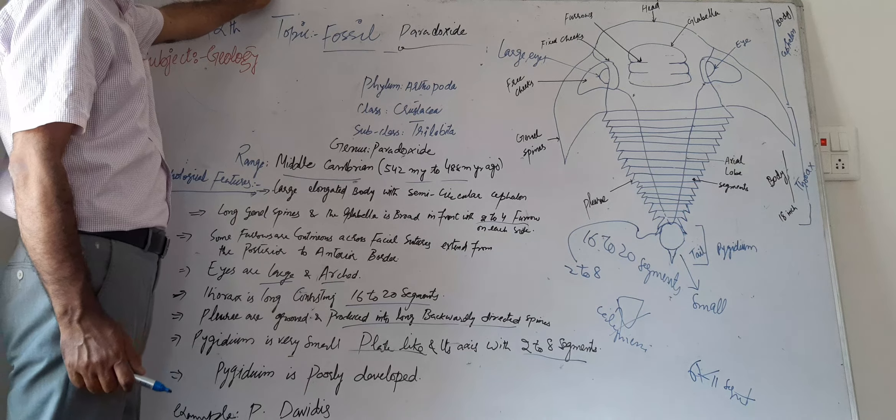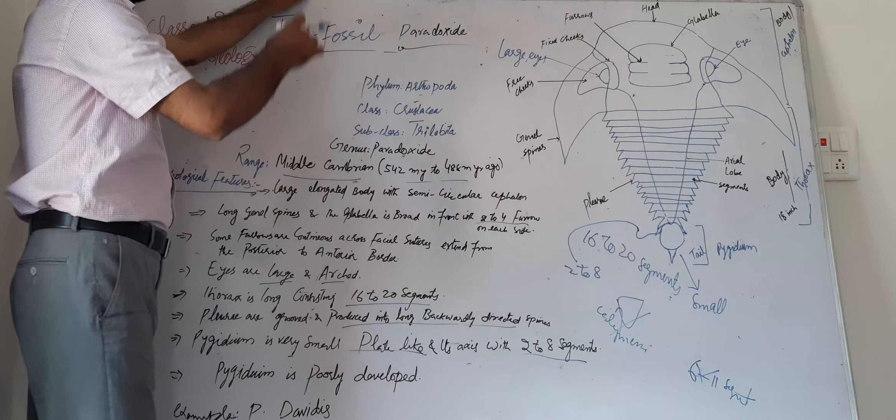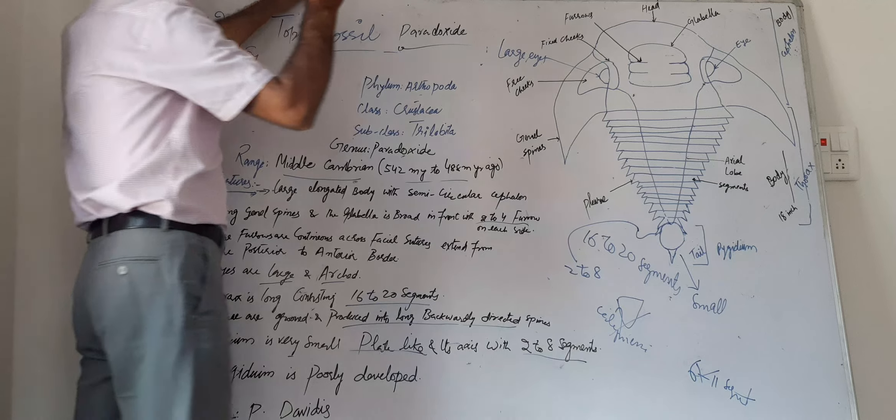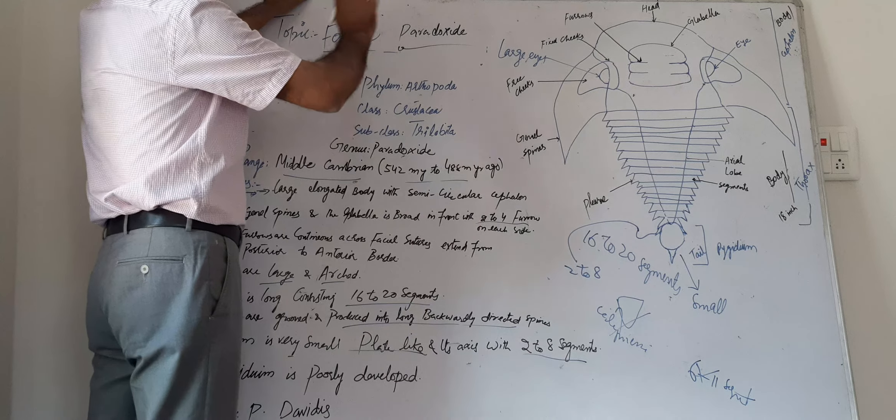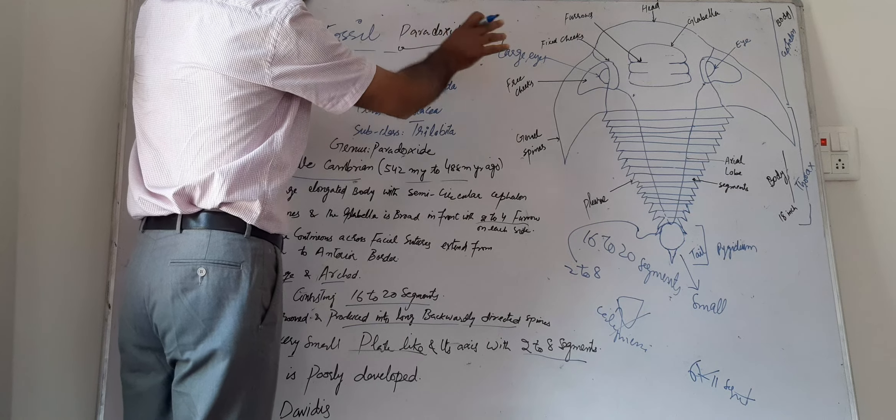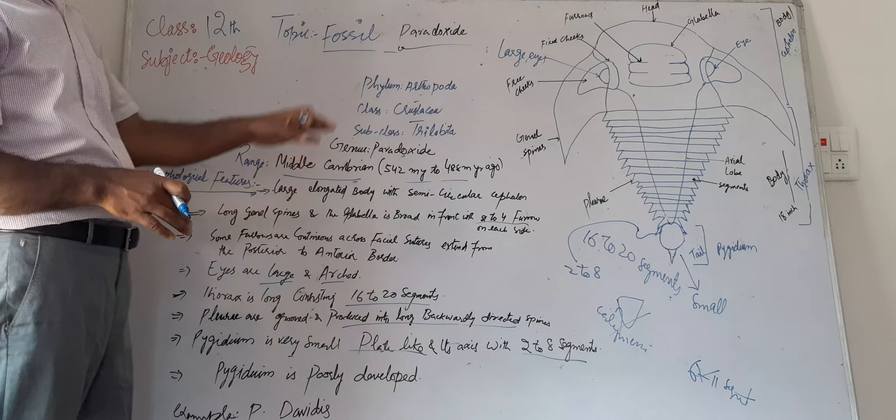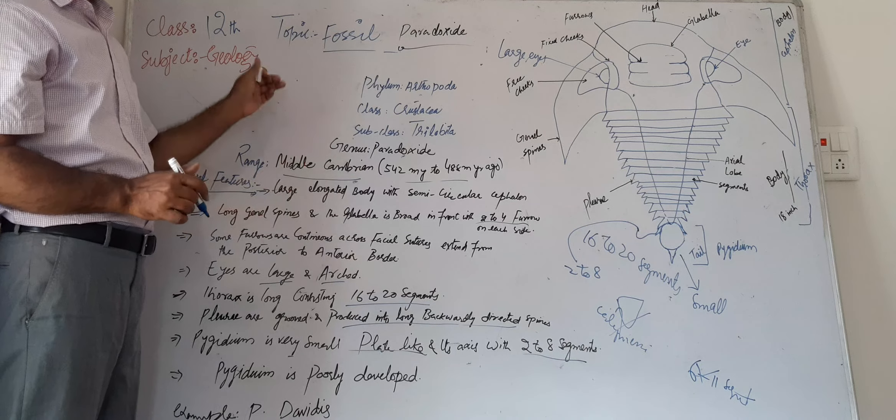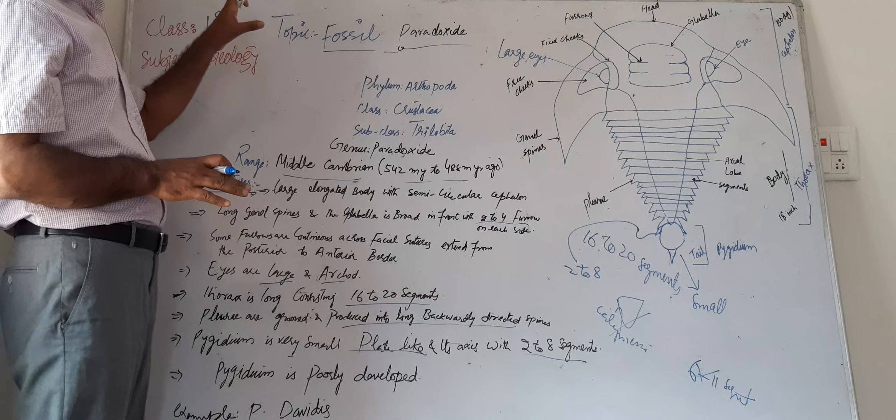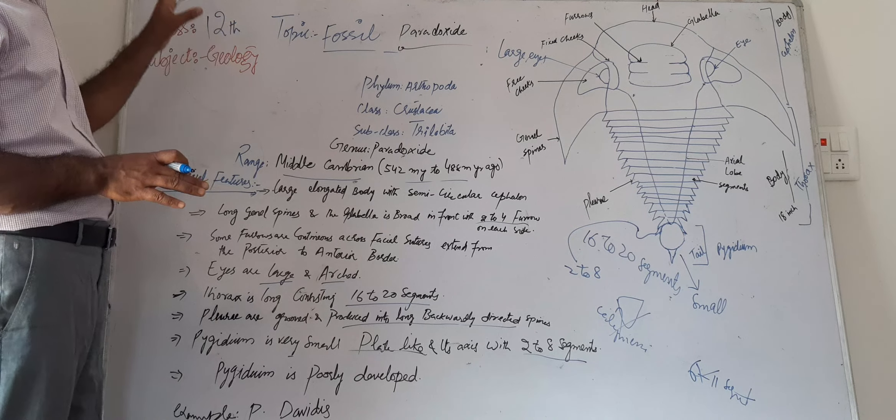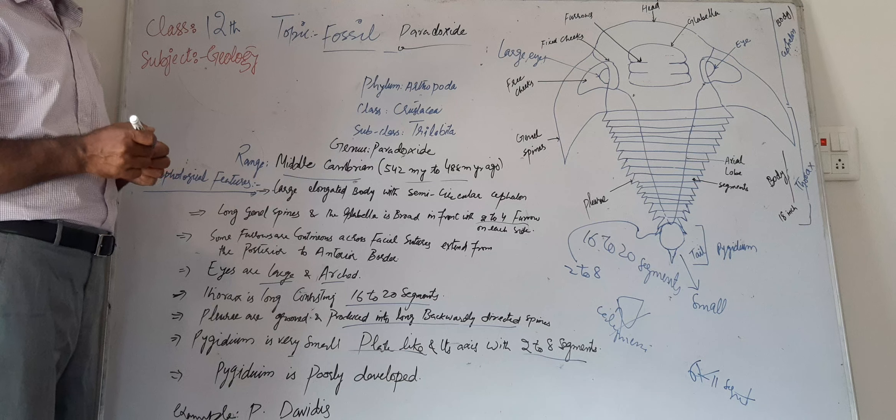This is simple—we can draw this figure, a diagram, and then label its different parts. That is the easiest way to explain, understand, or discuss the different things regarding the fossil Paradoxides. This was all about the different points about Paradoxides which help us in easy understanding of this fossil.